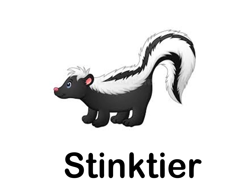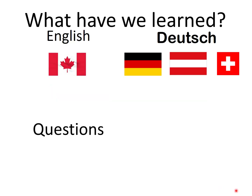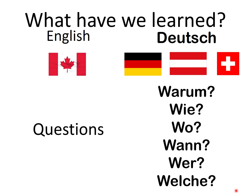Excellent. Then we learned how to ask questions in German. The very first question word we learned was in the very first lesson: we asked why — and that was warum. We also asked wie, as in wie geht's or wie heißt du, which is how. Wo, which means where. Wann, which means when. Wer, which means who. And welche, which means which. Repeat after me: Warum, wie, wo, wann, wer, and welche. Excellent — very important words to be able to ask questions.